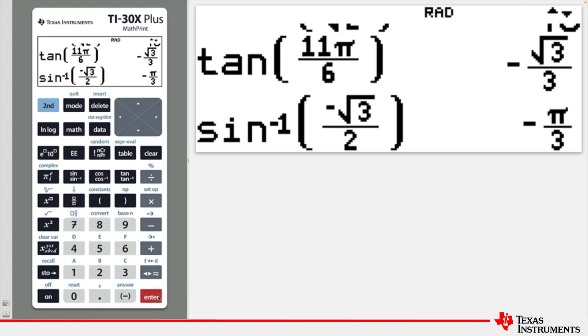And this tells us that the inverse sine of minus root 3 on 2 can be expressed as minus π on 3.